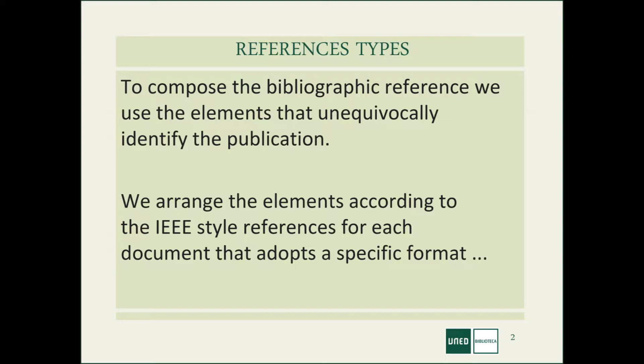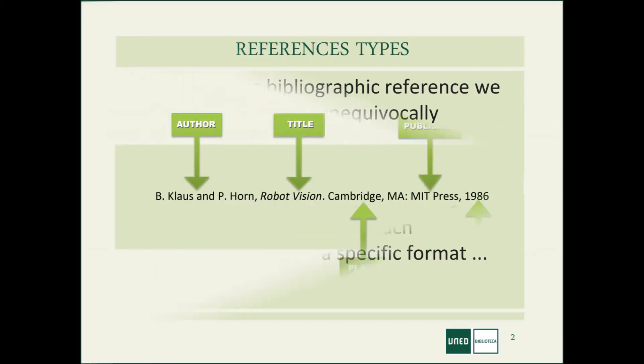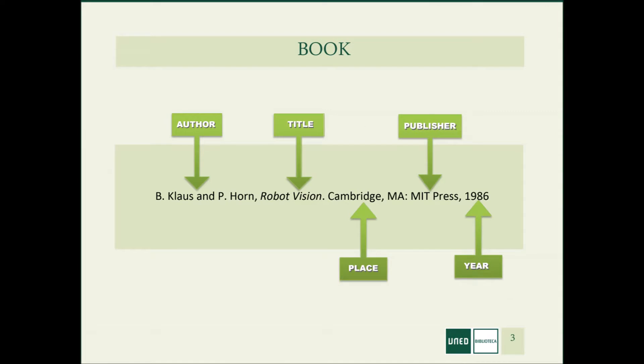The main parts of a reference are the author, the name of the article, patent, conference document, etc., and the title of the journal or book in italics. Now we start with books.